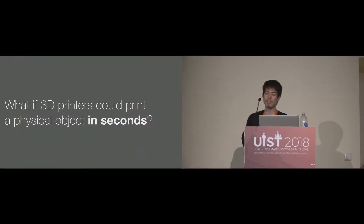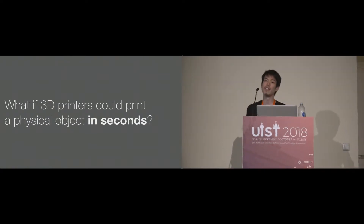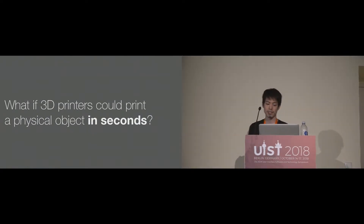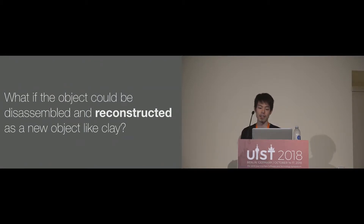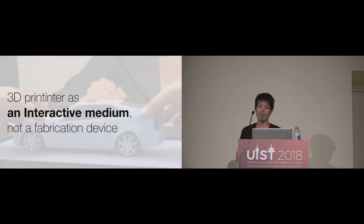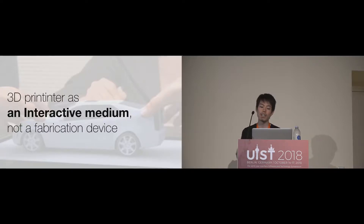What if the 3D printer could print physical objects in seconds? And what if the object could be disassembled and reconstructed as a new object like clay? We speculated that with these capabilities, the 3D printer could be an interactive medium rather than just a fabrication device, where people can interactively and physically design, explore, and communicate through dynamic physical objects.